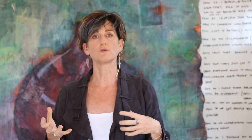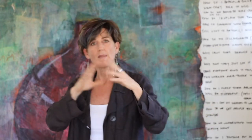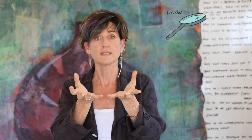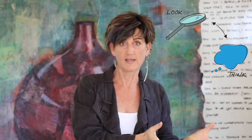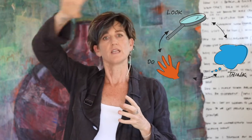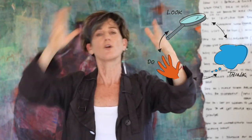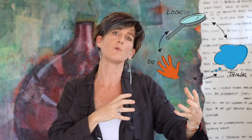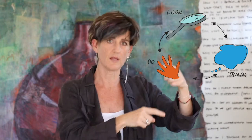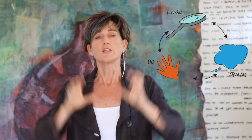I will often use this meta model with my clients because it stops it from being seen as a linear process. The meta model has three different phases: a Look phase, a Think phase, and a Do phase. These are not linear — they go back and forth. It's more a way of gauging where you are in the process rather than saying do this, then that, then that.